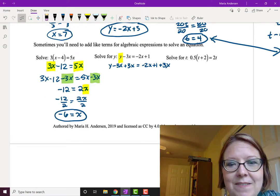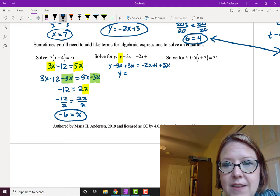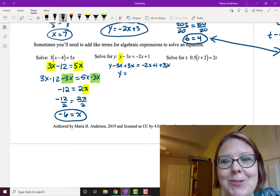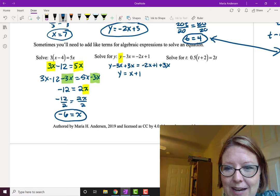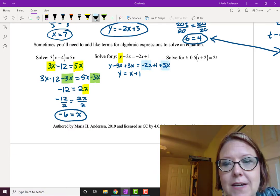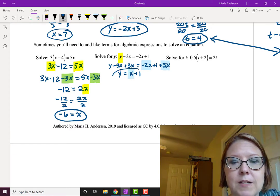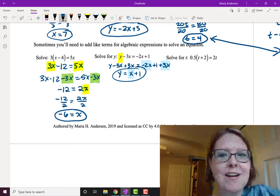y minus 3x plus 3x equals negative 2x plus 1 plus 3x. On the left side of the equation, we now have y isolated, and on the right side of the equation, we have negative 2x plus 1 plus 3x. So negative 2x plus 3x, those are like terms, and that makes 1x or just x, and then we still have the plus 1. So all I did there was combine negative 2x and 3x to get x. So we've got y equals x plus 1, and we've solved for y. So that one actually simplified really quickly.